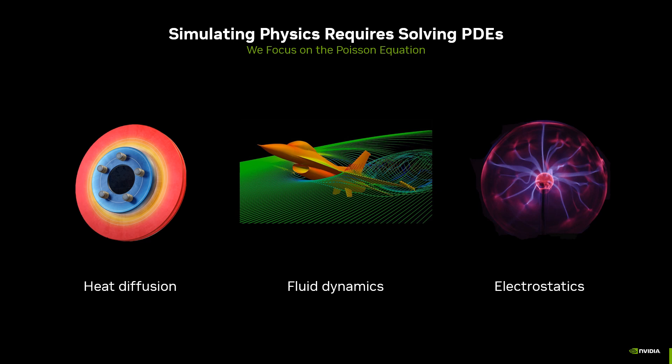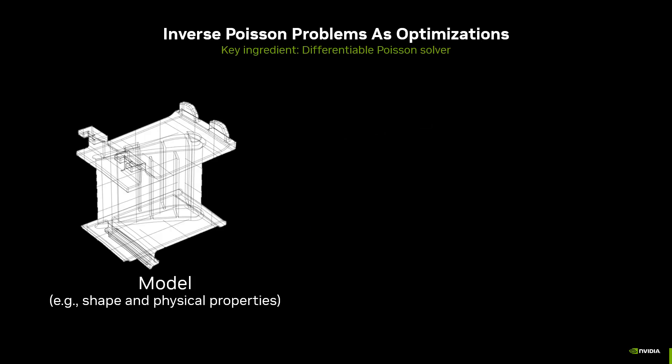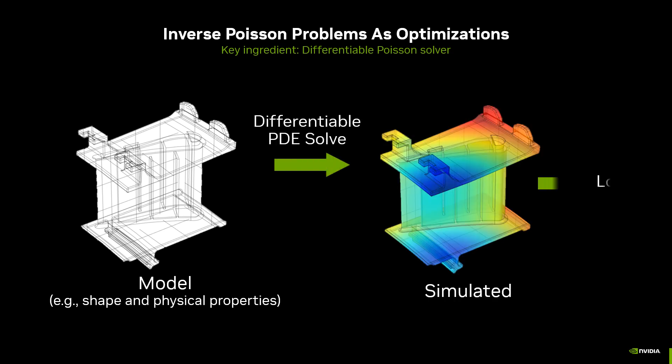Simulating physics requires solving partial differential equations. Our work develops new theories and algorithms for the inverse design of physical systems governed by the Poisson equation, an important PDE that models a variety of physical phenomena. We solve the inverse problem by refining model parameters to minimize some loss, and to achieve this efficiently using gradient descent, a differentiable Poisson solver is essential.